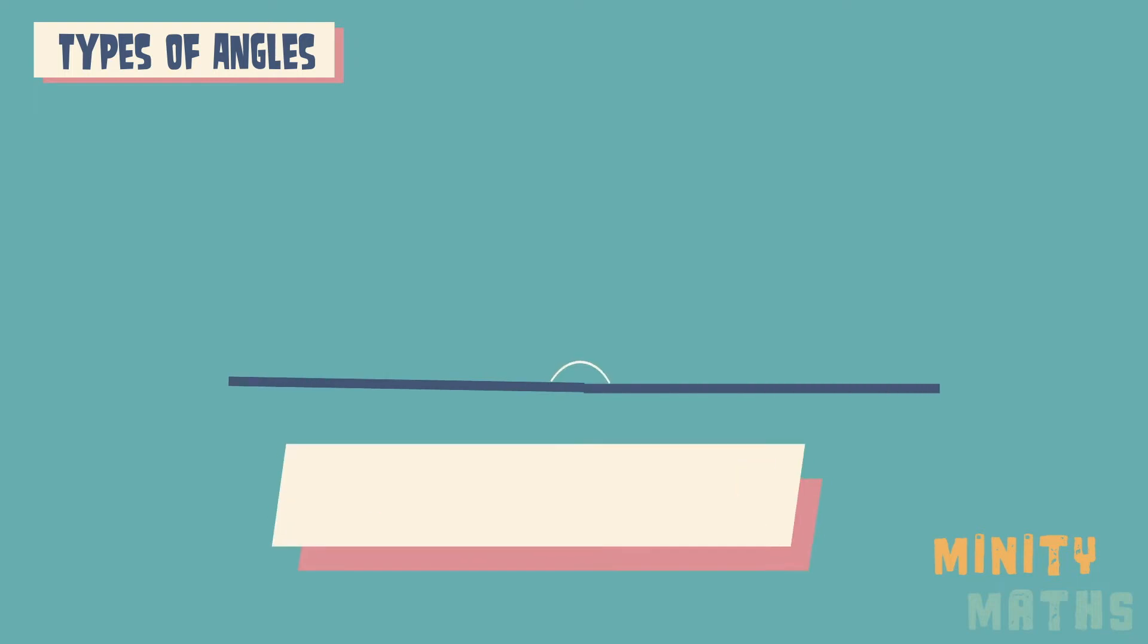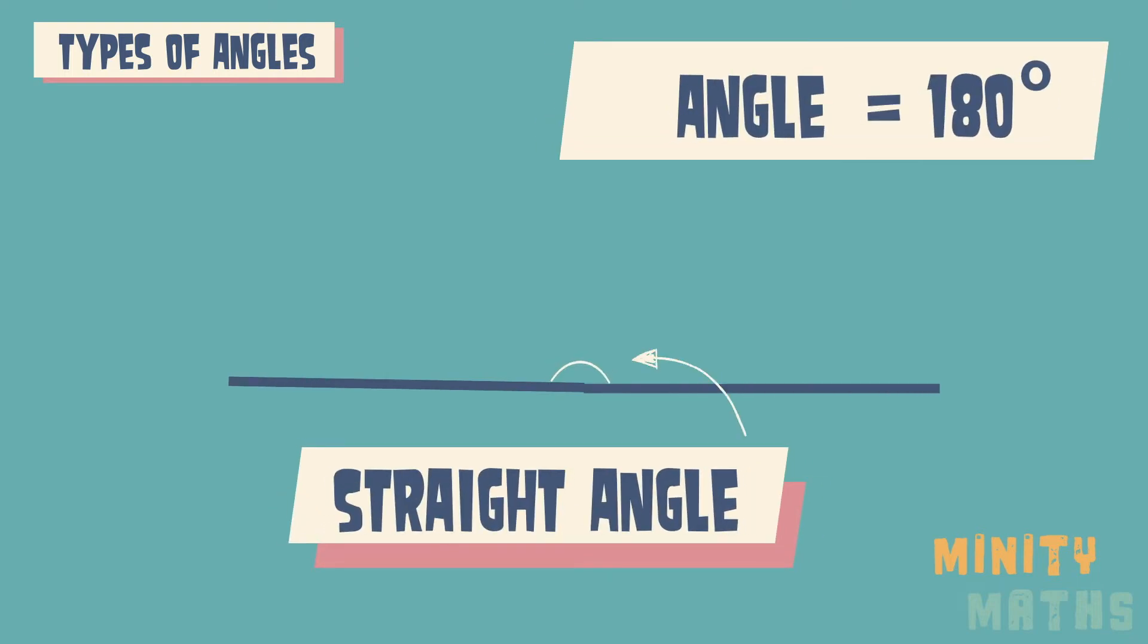A straight angle is equal to 180 degrees and lies upon a straight line.